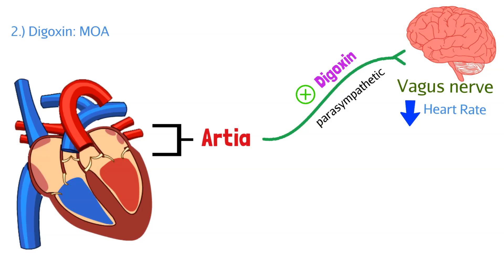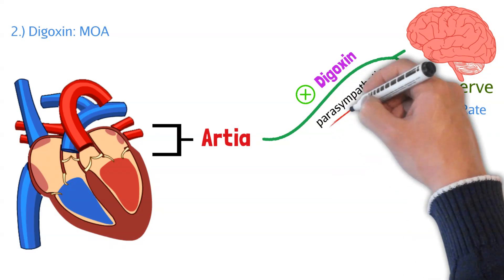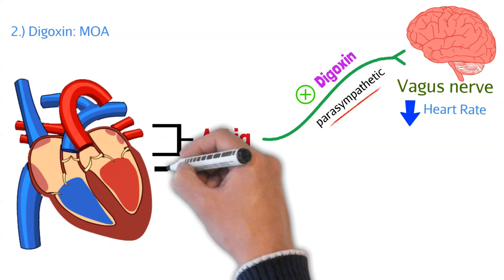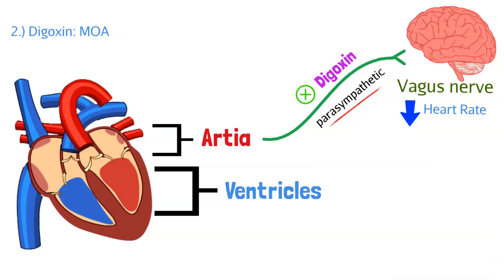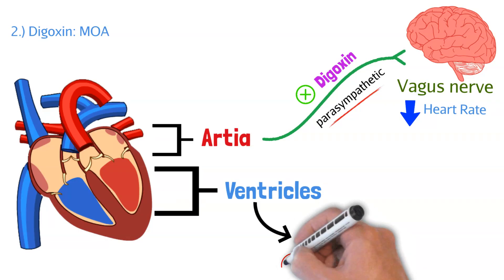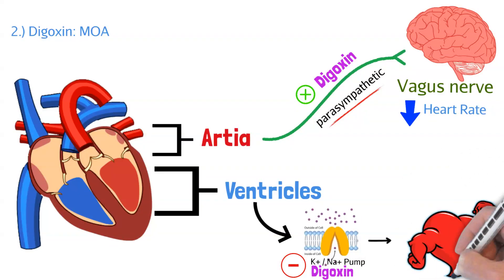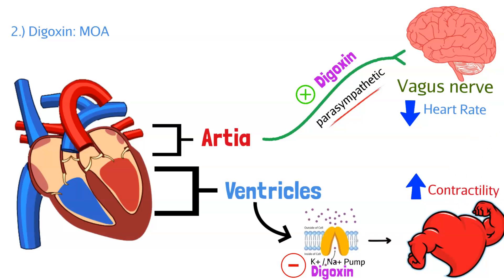This slows down heart rate, which is important because patients with atrial fibrillation experience an increased heart rate. As digoxin works on the parasympathetic nervous system, it helps lower that heart rate — which is what we want. The second place digoxin can work is in the ventricles. It blocks the sodium-potassium pump, which allows the ventricles to contract harder. This benefits patients with heart failure because we want the heart to pump out blood as efficiently as possible, and heart failure patients have difficulty achieving that contractility.